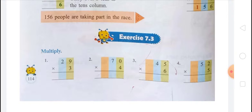The next is 70 multiplied by 4. In step one, multiply the ones: 4 times 0 ones equals 0, because any number multiplied by 0 is 0. In step two, multiply the tens: 4 times 7 tens equals 28 tens. So the answer is 280.